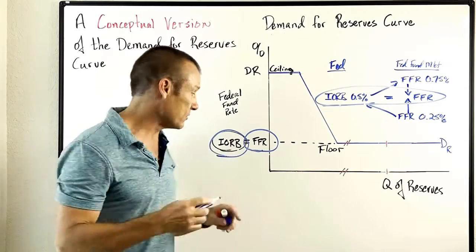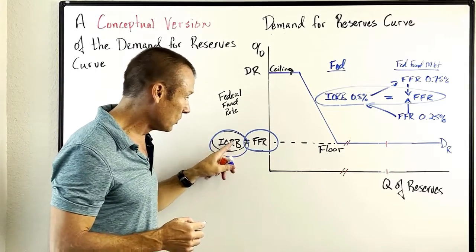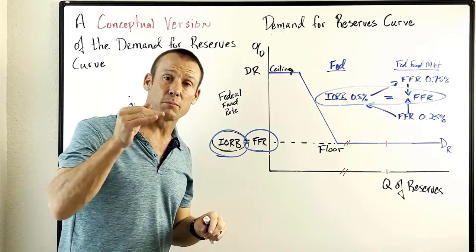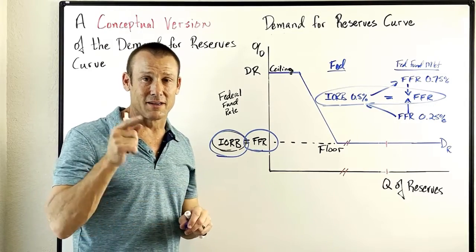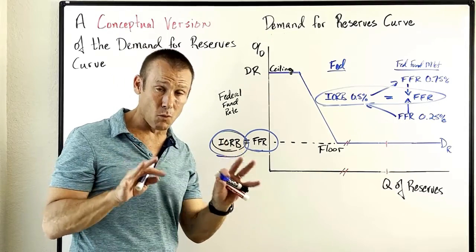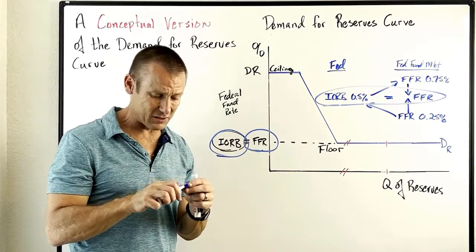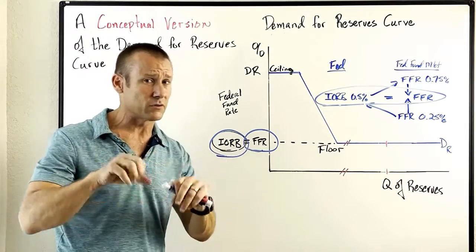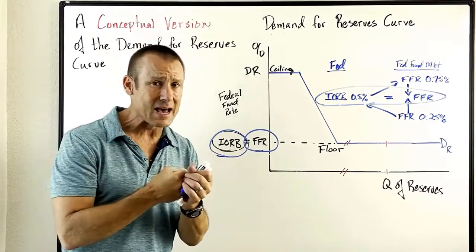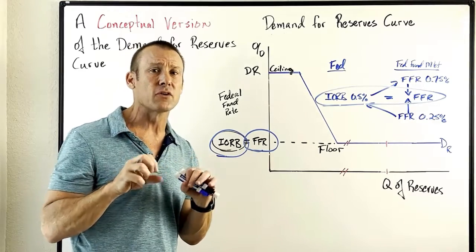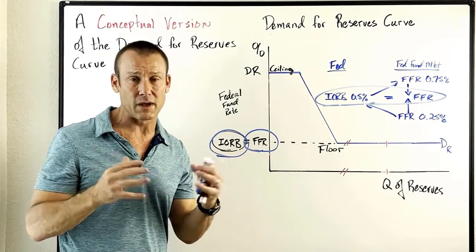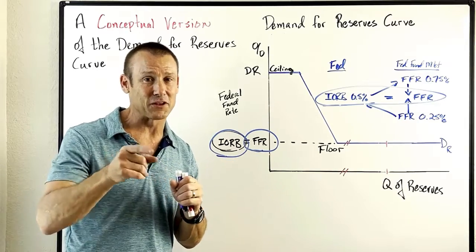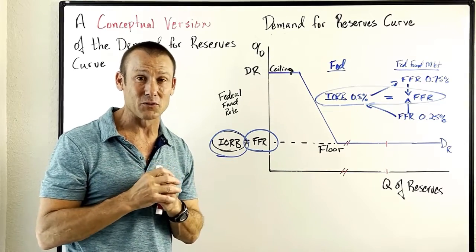And there you have it — the new number one policy tool for determining the federal funds rate under the ample reserve policy framework. There are a couple more videos to explain a few nuances, but if you've watched videos 1, 2, and 3, you've got the policy framework. Everything else is just nuances for those who want to get into the weeds. Thanks for tuning in — maybe we'll see you in those extra videos.